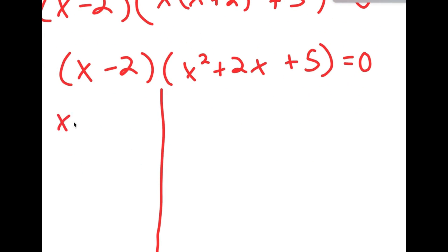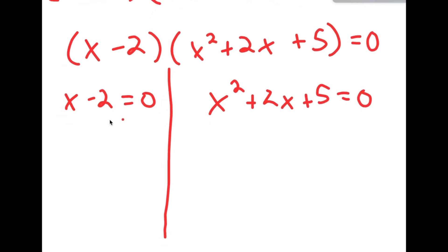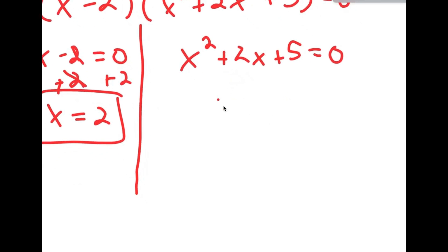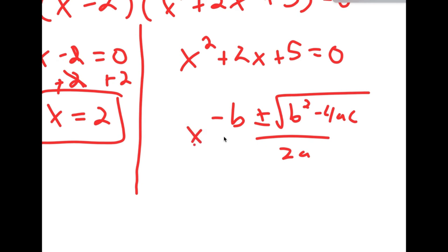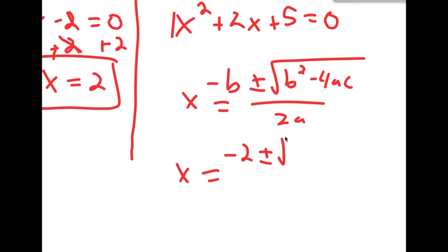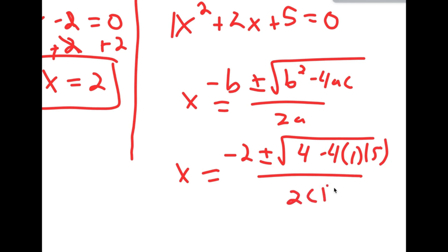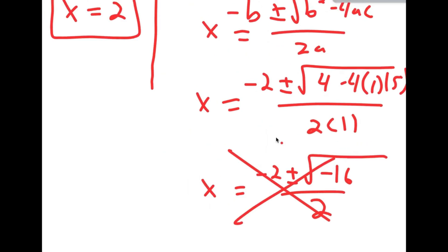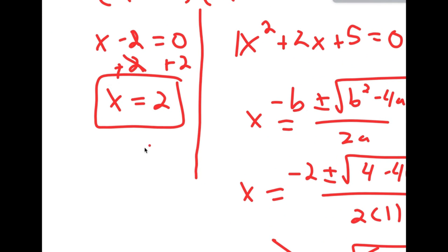This gives two equations: x − 2 = 0, so x = 2 — the solution we found by guessing — and x² + 2x + 5 = 0. Applying the quadratic formula to the second equation gives (−2 ± √(4 − 20))/2 = (−2 ± √(−16))/2. Since we can't take the square root of a negative number, there is no real solution there. Therefore, the only solution to this equation is x = 2.